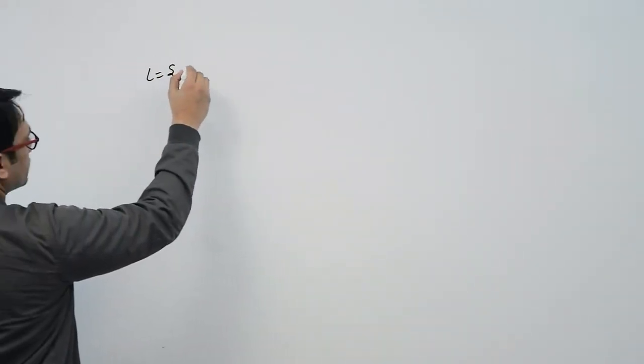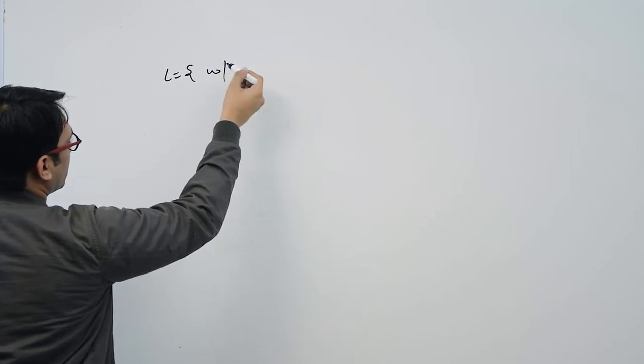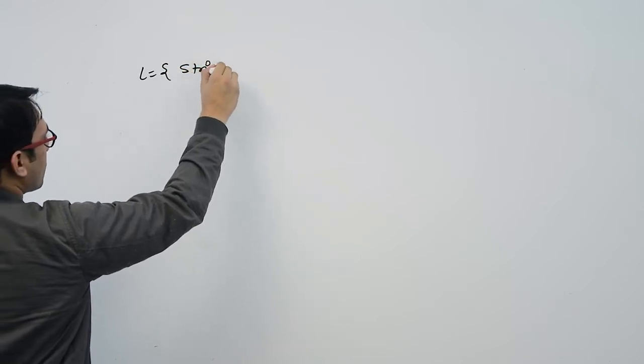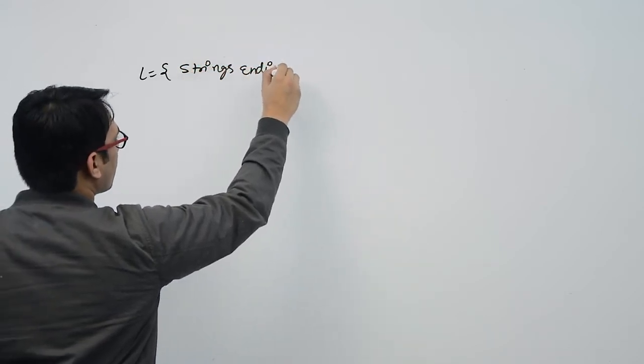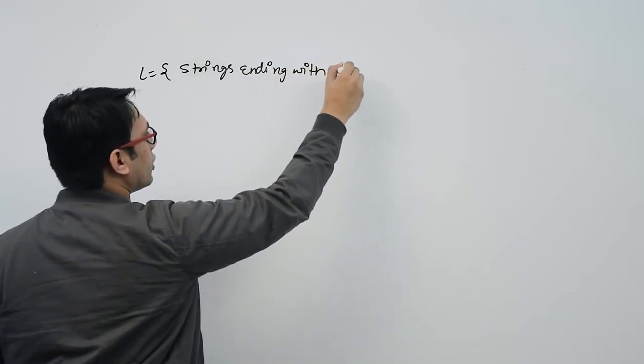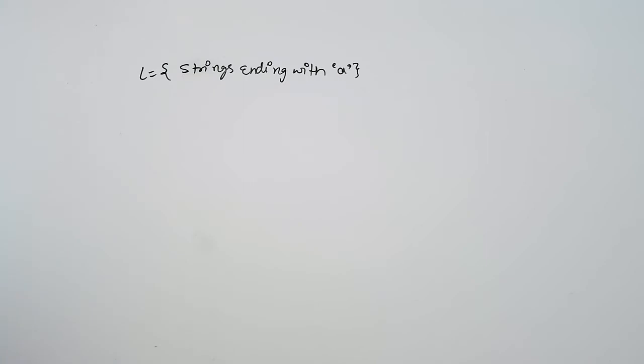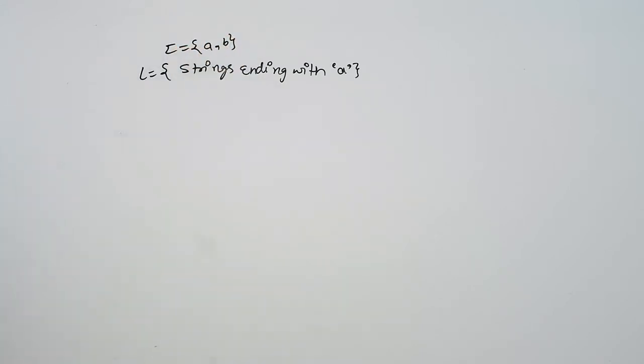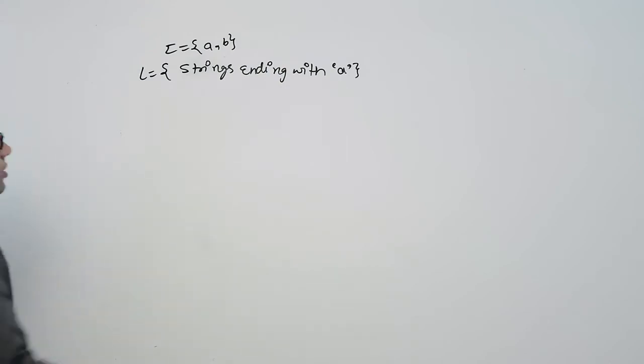Now let us look at how we can convert an NFA to a DFA. Let us take a simple example. The language is W such that strings ending with small 'a', over the alphabet sigma equal to {a, b}.